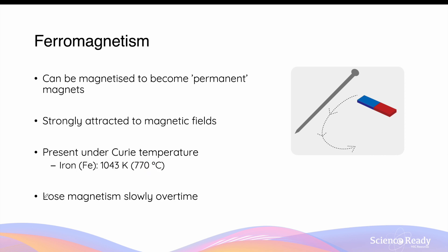An important point: once we remove the external magnetic field used to magnetize the material, the domains in the material — such as an iron nail — will slowly reorientate away from their alignment. Over time, fewer and fewer domains point in the same direction. That is why ferromagnetic materials, although described as permanent magnets, are not truly permanent — they gradually lose their magnetic properties due to the reorientation of domains.